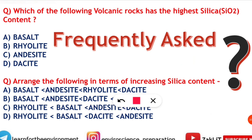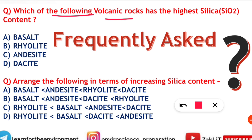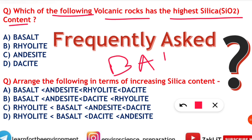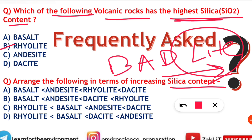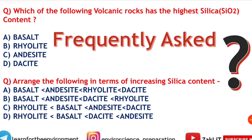Now we can answer the questions we discussed at the start. Question: which of the following volcanic rocks has the highest silica content? Using the BAD LITE formula — B, A, D, L-I-T-E — it shows increasing silica content, so the highest is LITE, which means rhyolite. Option B is correct. Similarly, for 'arrange the following in terms of increasing silica content', we know the trick: the order is basalt, andesite, dacite, and rhyolite.